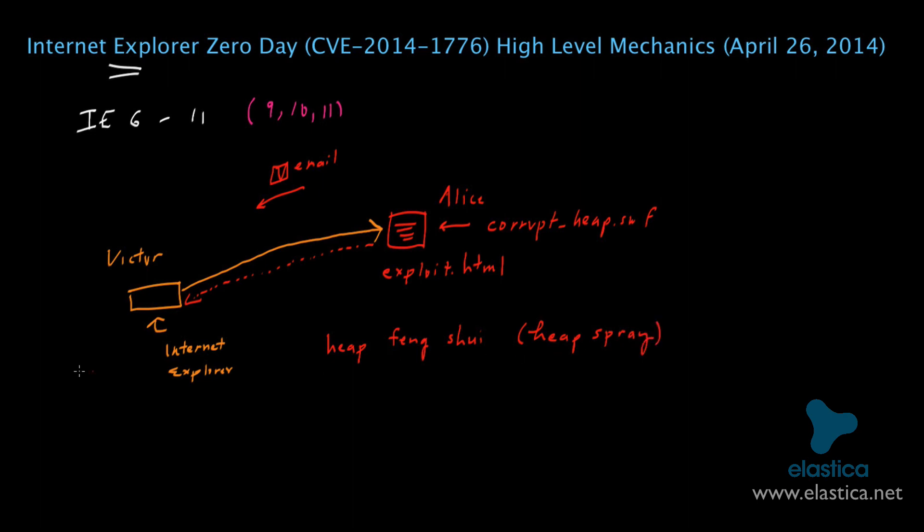What happens in a heap feng shui attack is that a section of memory on Victor's computer, known in this case as the heap, is filled with malicious instructions by the attacker's code. Now the heap is simply just an area in a computer's memory that is used by a Windows process.